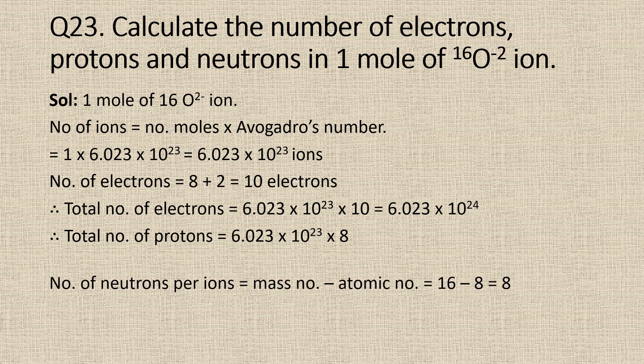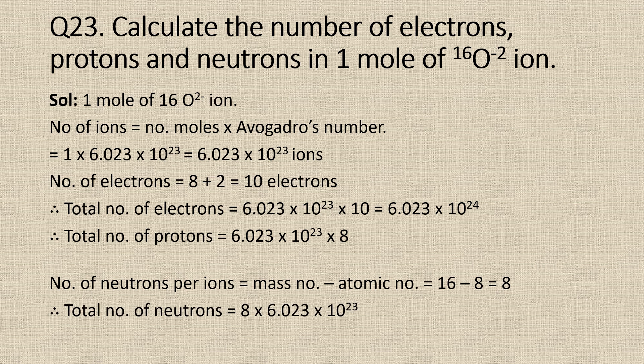The number of neutrons per ion is equal to mass number minus atomic number, which is equal to 16 minus 8, which is equal to 8. Again, there are Avogadro's number of ions, so the total number of neutrons will be 8 into Avogadro's number, which is equal to 8 into 6.023 into 10 to the power 23 neutrons.